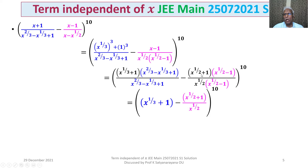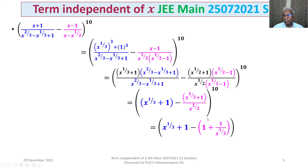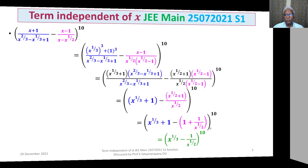After cancellation we get x^(1/3) + 1 minus (x^(1/2) + 1) / x^(1/2). Dividing the numerator: x^(1/2) / x^(1/2) gives 1, plus 1/x^(1/2). We cancel the +1 and −1 terms, thus we get x^(1/3) minus 1/x^(1/2), whole to the power of 10.